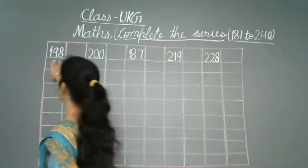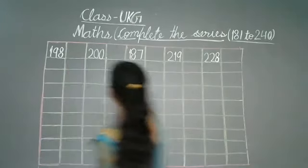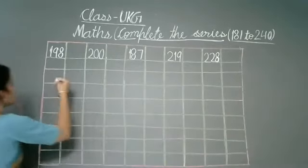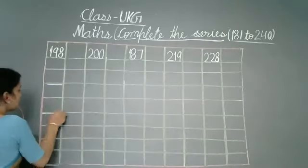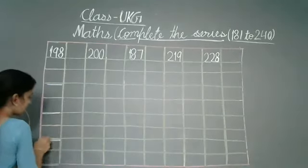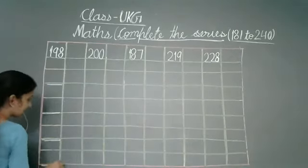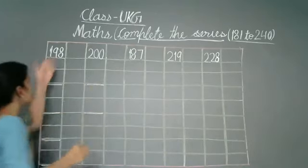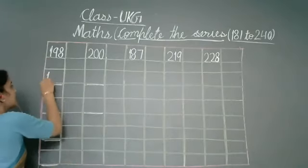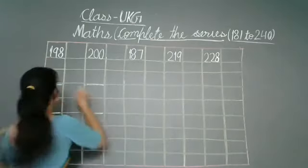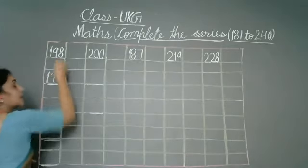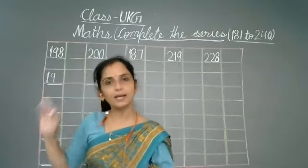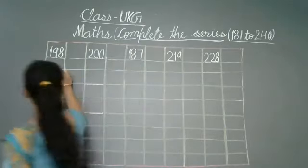I have written here 198. What happens in the complete series? What happens after 198? We will write 1 straight. We have here 9 to 9. What happens after 8? After 9 comes after 198. Then we will write 199.